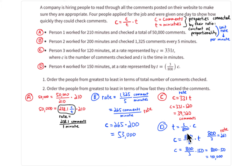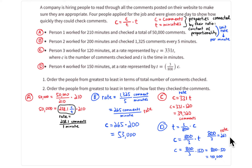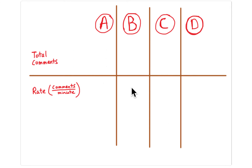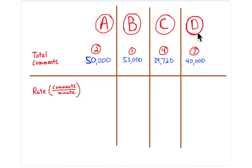Now we need to put results in order, which is tough to do just by looking, so I organized everything into a table. The table shows the total number of comments and the comments per minute for each applicant A, B, C, and D. The total comments are: A = 50,000; B = 53,000; C = 39,720; D = 40,000.